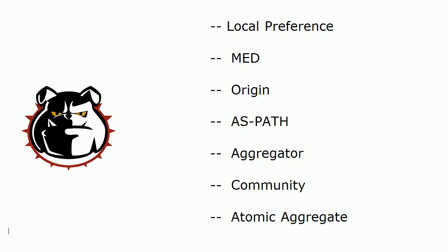Today we've got LocalPref, MED, Origin, AS Path, Aggregator, Community, and Atomic Aggregate. I don't know who came up with that last one, but I just like saying Atomic Aggregate. Tell me on this screen — and it's always 'select all that apply' — which one or ones of these are optional and non-transitive? Optional and non-transitive. If you want to pause the video for a moment, now is the time to do it.